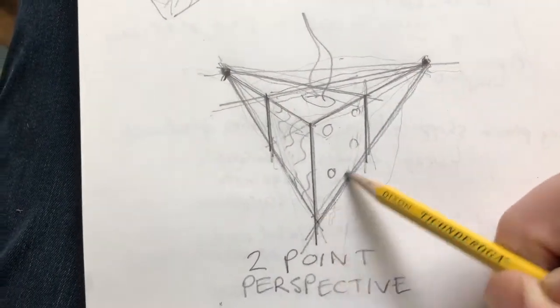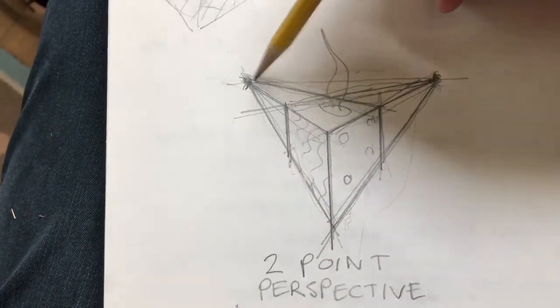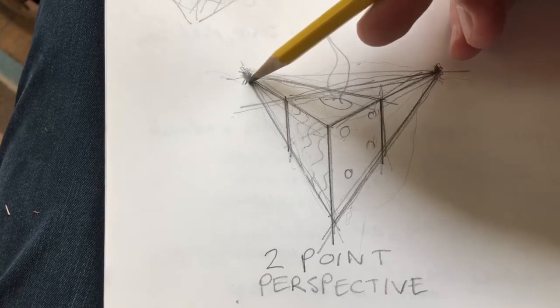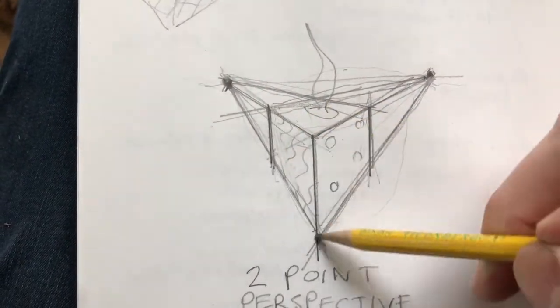These three lines here point to that dot, and these three lines here point to that dot. And then you have your straight lines like that.